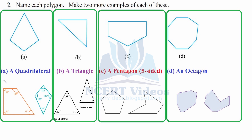For part B, a three-sided figure is a triangle. This one is isosceles, having two sides equal, and this one is equilateral, having all angles 60° and all sides equal. For part C, a figure with five sides is a pentagon. This is a regular pentagon and here is another pentagon.